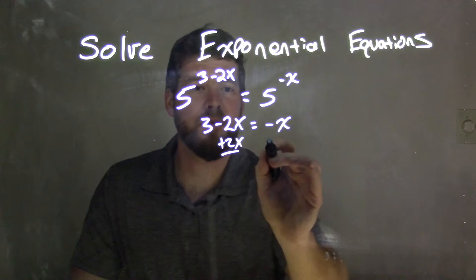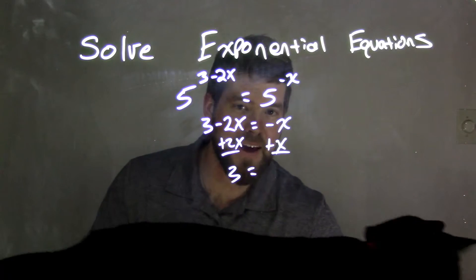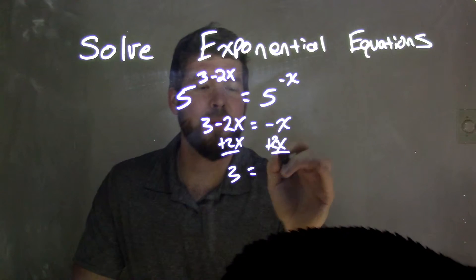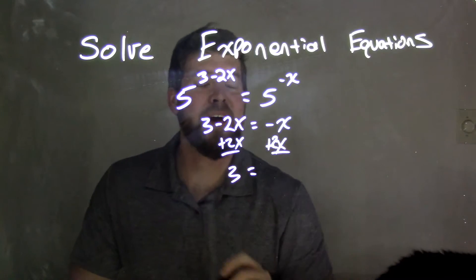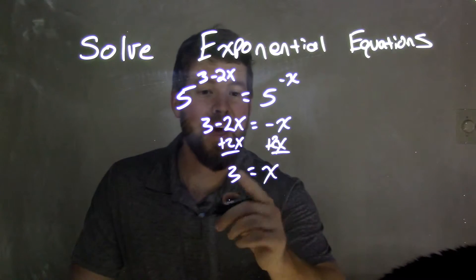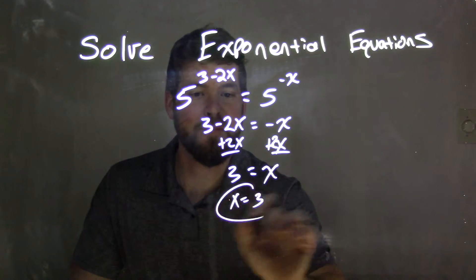We add 2x to both sides. Negative x plus 2x gives me a positive x, and we are left with 3 equals x, which we can flip to x equals 3. Okay?